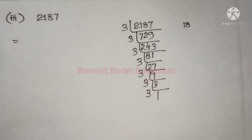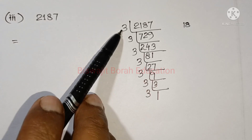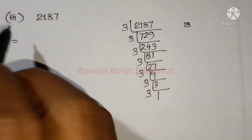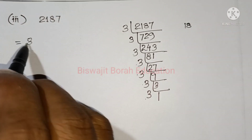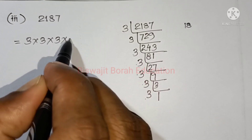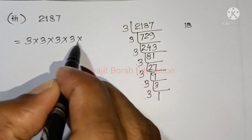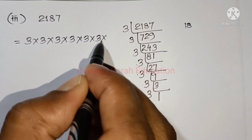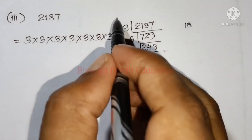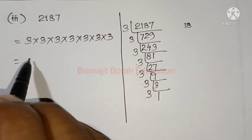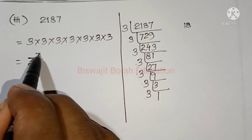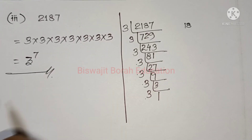So I am counting 3 here — 1, 2, 3, 4, 5, 6, 7. So 3×3×3×3. Sorry, sorry. So I am writing this as 3 × 3 to the power 7. One more thing to clarify here.